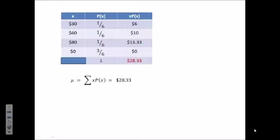So here's our table. And mu, therefore, is equal to the sum of the x·p(x) column, which is the sum of this column. And that is $28.33. That means, on average, the payout for this game is $28.33.